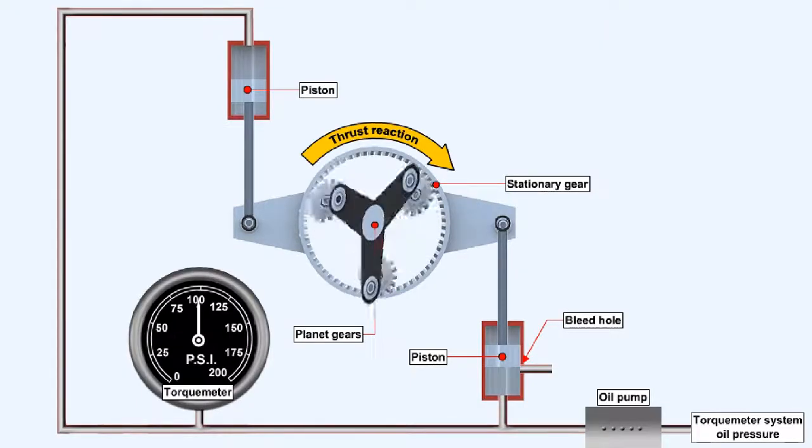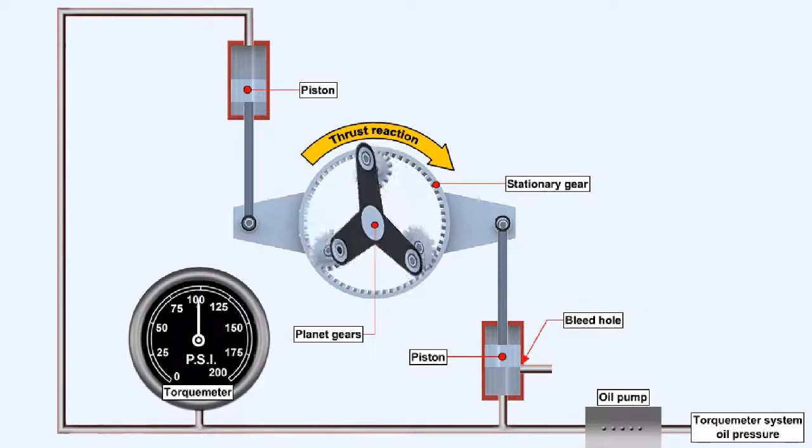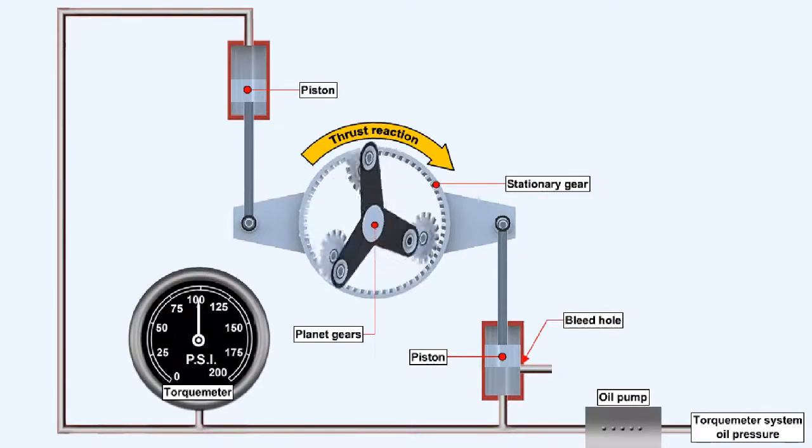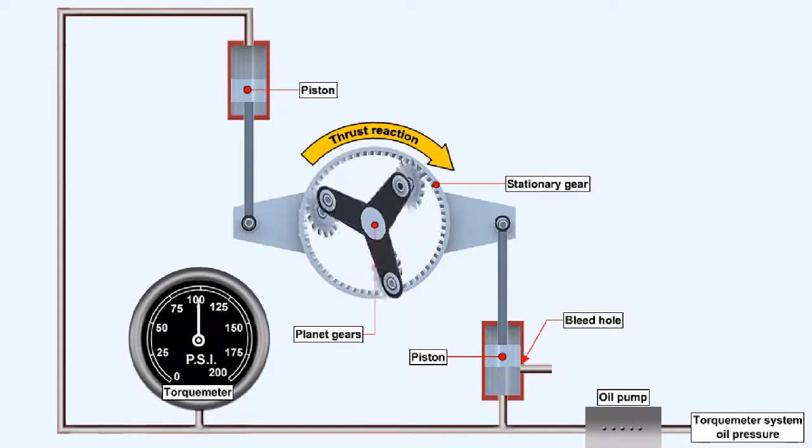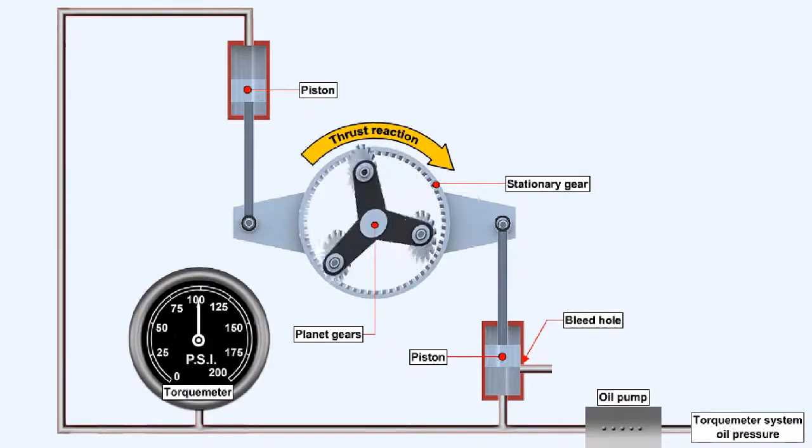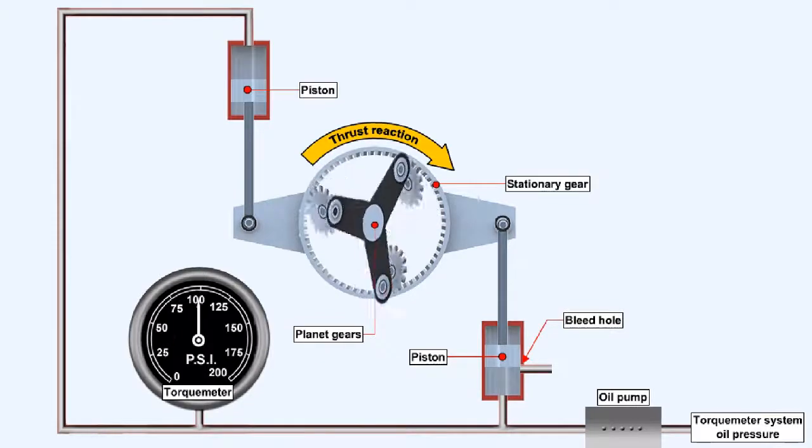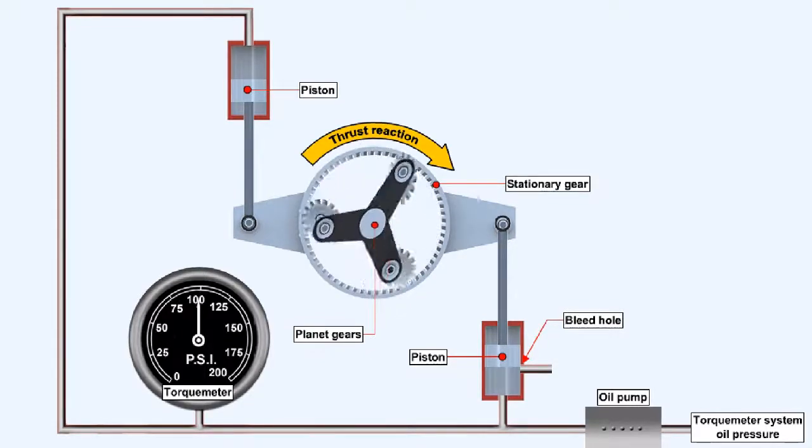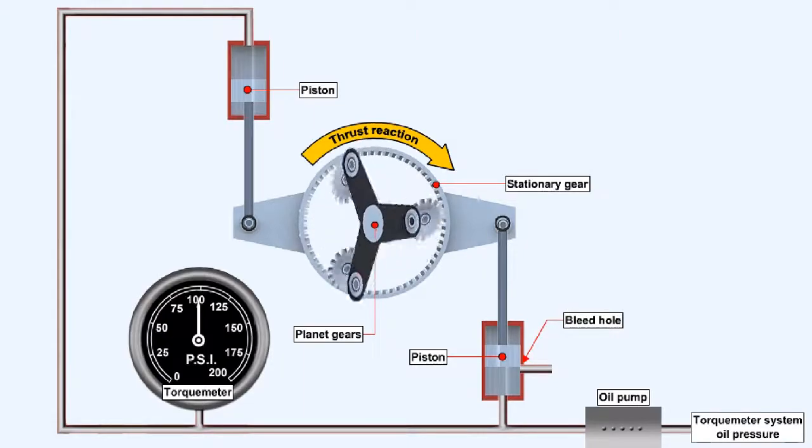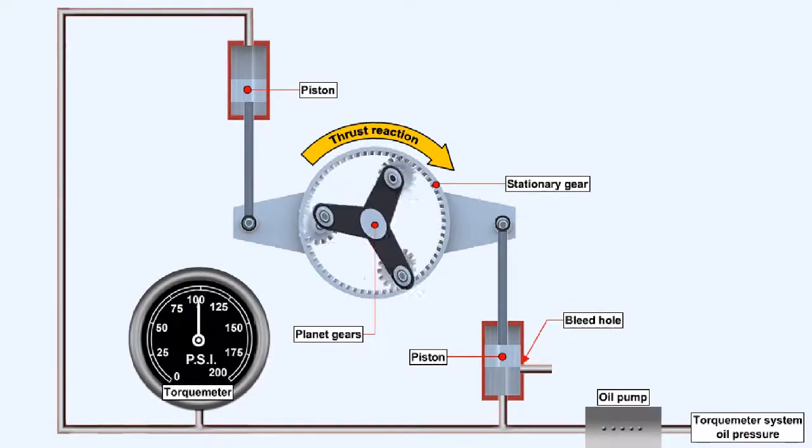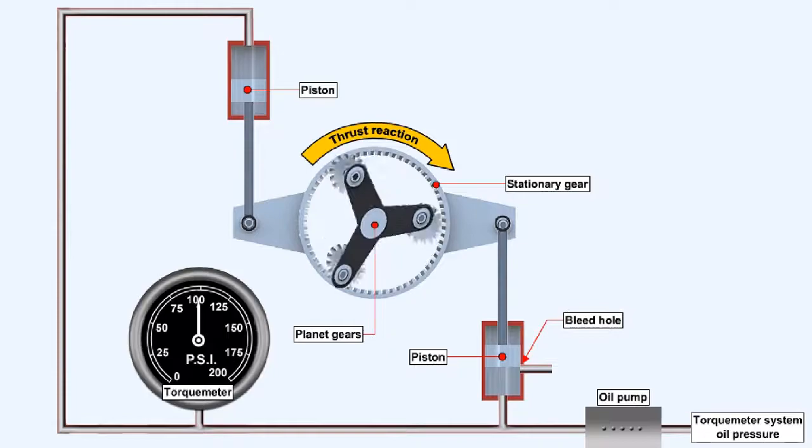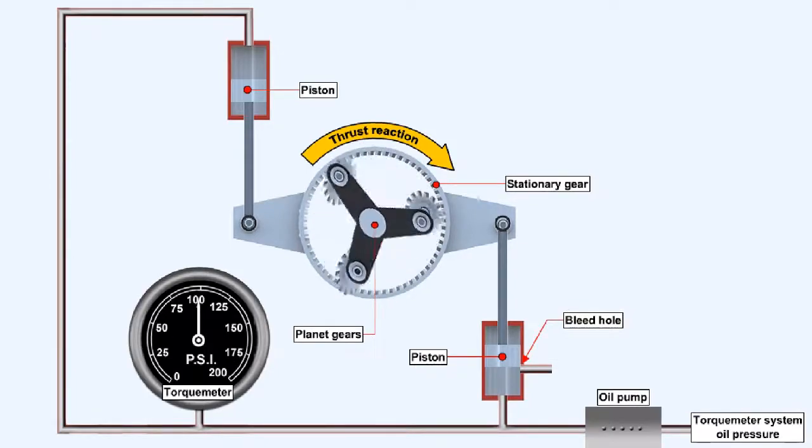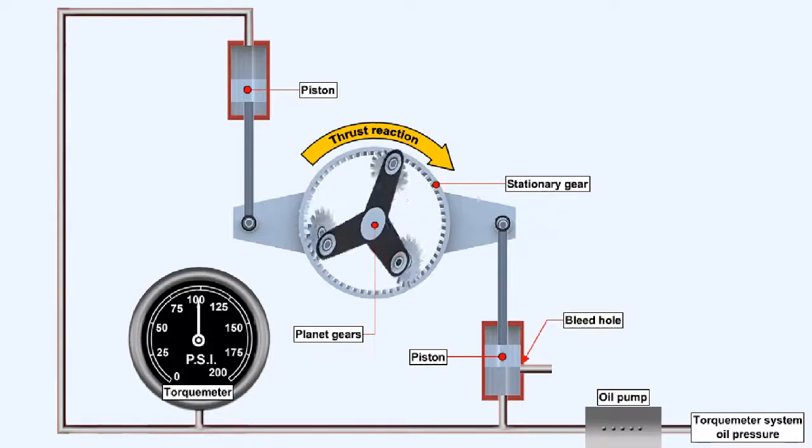When the engine is running, the pinions or planet gears are being driven around inside the stationary gear by the central engine crankshaft. The thrust reaction generated by the rotation of the pinions will try to rotate the stationary gear in the opposite direction to that of the pinions. The stationary gear is restrained by being attached to pistons, fitted within cylinders that are being supplied by oil pressure, which is generated by a torque meter system pump.